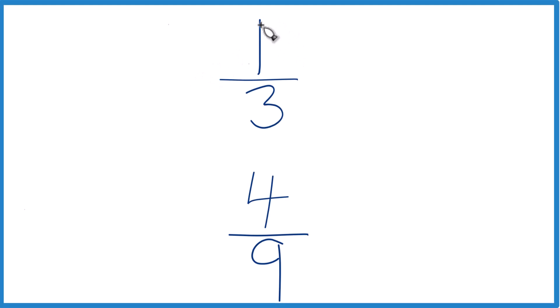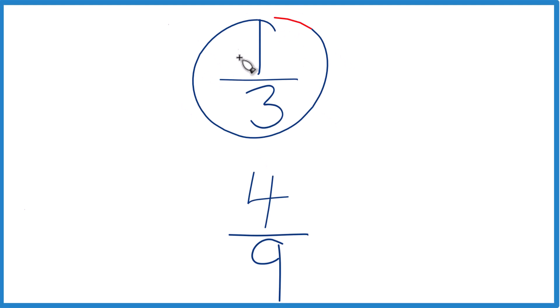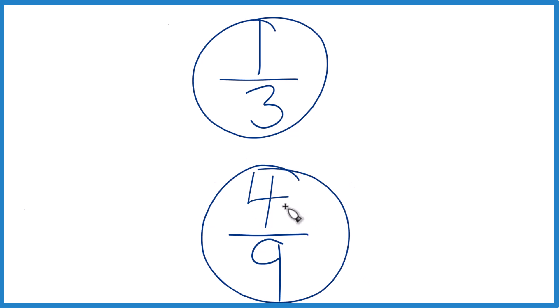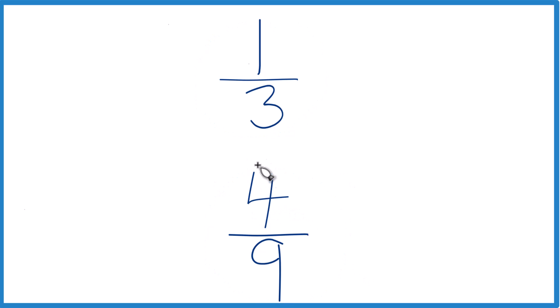If you're asked to figure out which fraction is greater — one-third or four-ninths — here's how you do it. You might be able to reason it out, but otherwise, what we could do is find a common denominator.